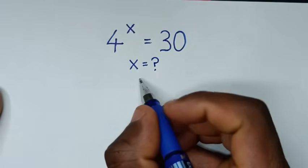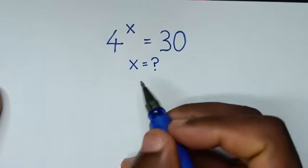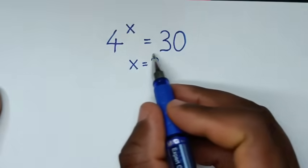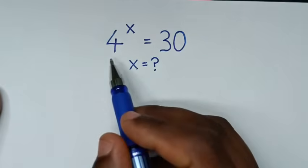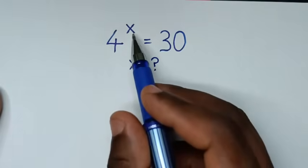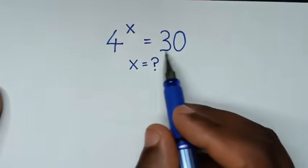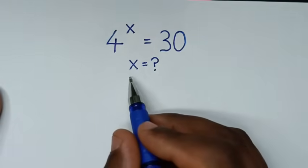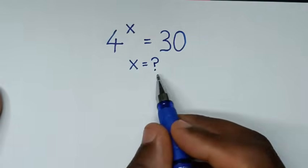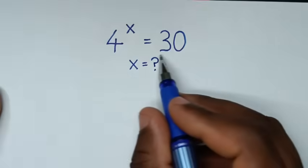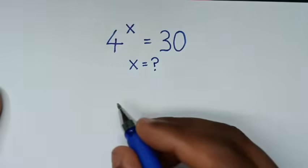Hello, you are welcome to solve this math problem which is 4 power x is equal to 30, to find the value of x from this equation.